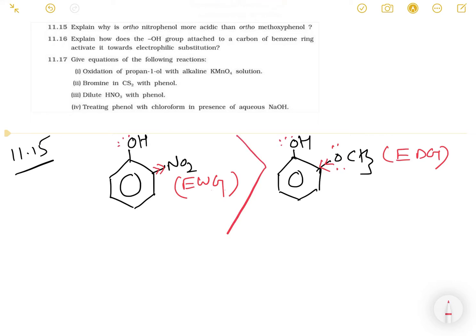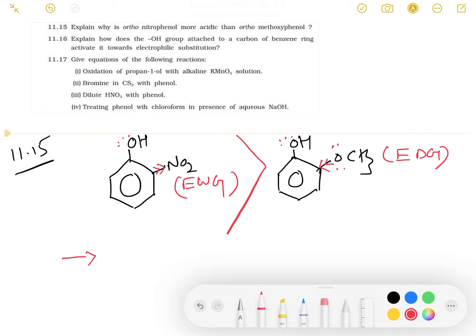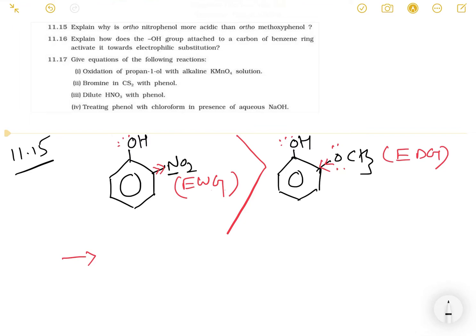The simple reason for this explanation is that due to the presence of an electron withdrawing group in ortho-nitrophenol, it is more acidic than ortho-methoxyphenol. Due to the electron withdrawing capacity of the NO2 group, the electron density on the O-H bond is reduced, so the O-H bond easily breaks and H+ is easily liberated, increasing acidity.